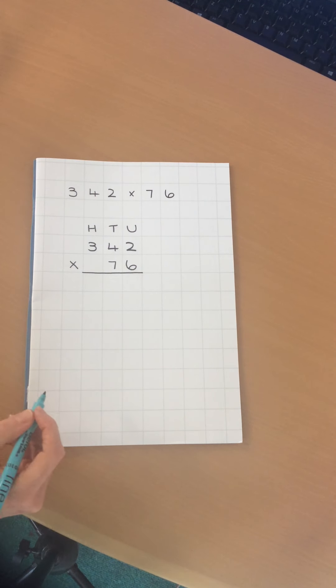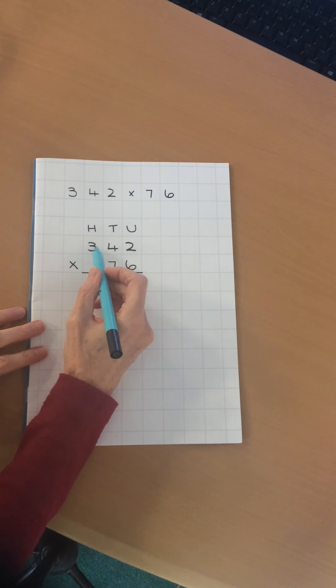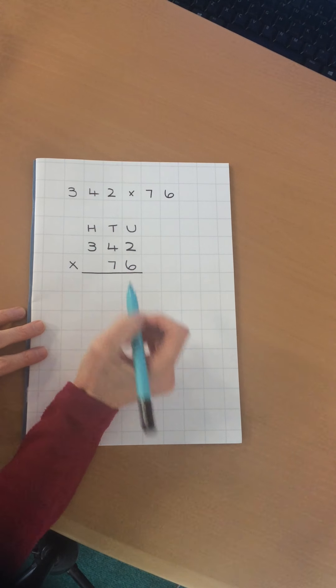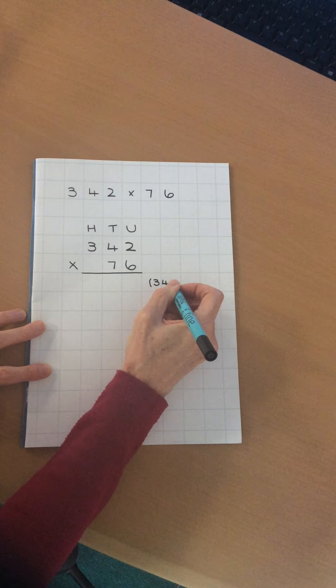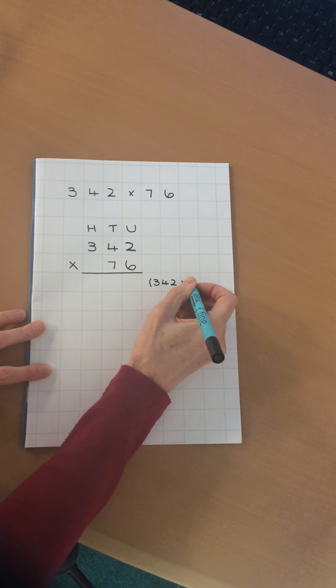The first thing we're going to think about is multiplying 342 by the units, by 6. I'm going to write that in brackets to remind me that that's what I'm doing. 342 multiplied by 6.